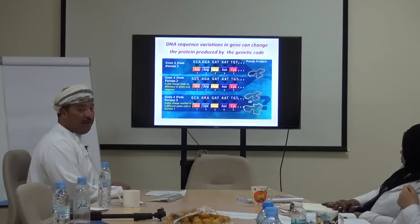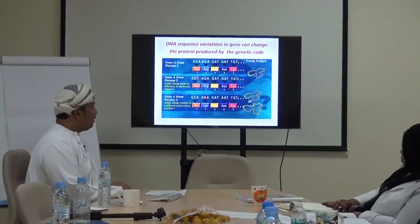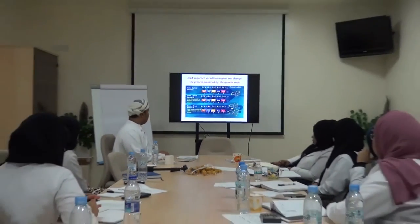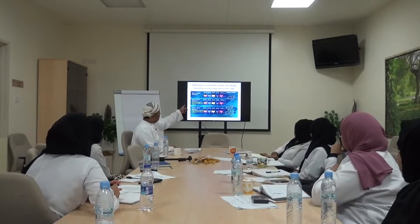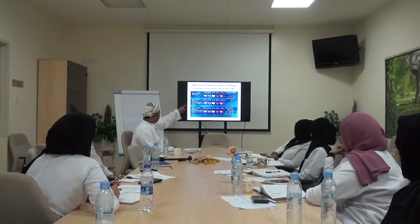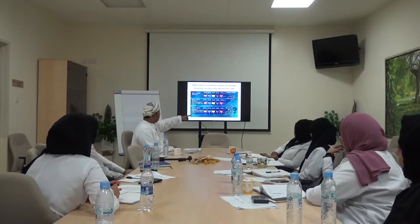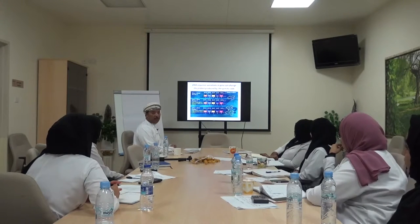This diagram shows sequence variation in a gene and how it can change the protein produced by the genetic code. You can see the normal base pair sequence and protein sequence. When A is replaced by G but forms the same amino acid, the protein is okay. But when G is replaced by A, changing arginine to lysine, the end protein is dysfunctional.